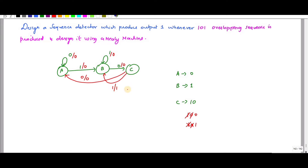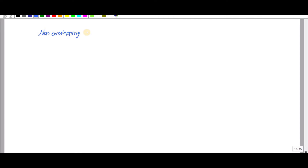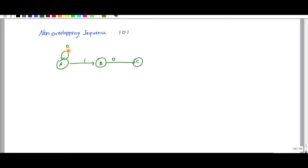This is how you design an overlapping sequence detector. Next is the non-overlapping sequence for the same one-zero-one detection. Here also there are three circles since it is a Mealy machine, labeled A, B, C with one-zero written. Since the input is one it goes to B. If it is zero it will remain in the same state — till now the output is not reached. If zero it goes to C, if one it remains in B.